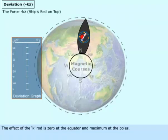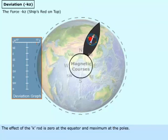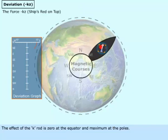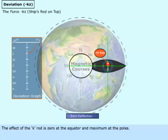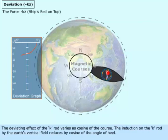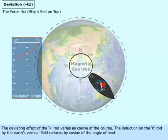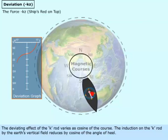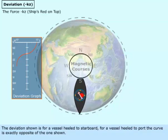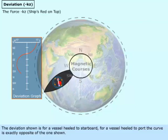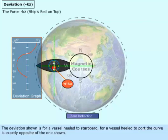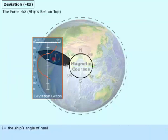The effect of the K-rod is zero at the equator and maximum at the poles. The deviating effect of the K-rod varies as cosine of the course. The induction on the K-rod by the Earth's vertical field reduces by cosine of the angle of heel. The deviation shown is for a vessel heeled to starboard. For a vessel heeled to port, the curve is exactly opposite of the one shown. I equals the ship's angle of heel.